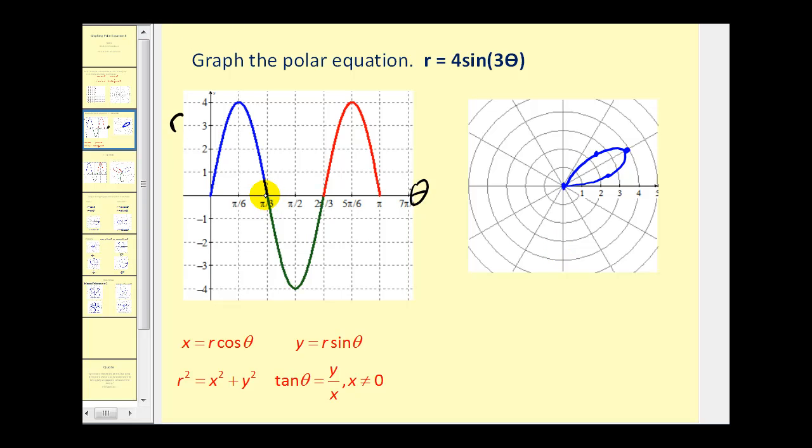So starting at pi over three r is equal to zero so we're back at the pole. At pi over two r is equal to negative four. So we plot the point negative four pi over two. Well here's pi over two but since r is negative four we plot the point in the opposite direction down here. So what we'll notice is from pi over three to pi over two the value of r changes from zero and decreases to negative four. So the points would look something like this. r is zero and decreases to negative four or a distance of positive four from the pole in the opposite direction. And then from pi over two to two pi over three r is equal to negative four and then it increases back to zero. Or the distance from the pole changes from the absolute value of negative four here back to zero.